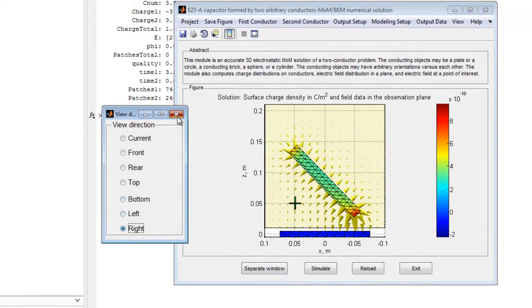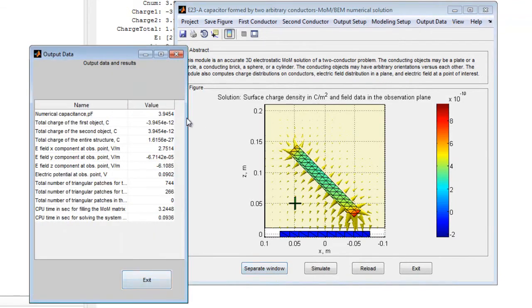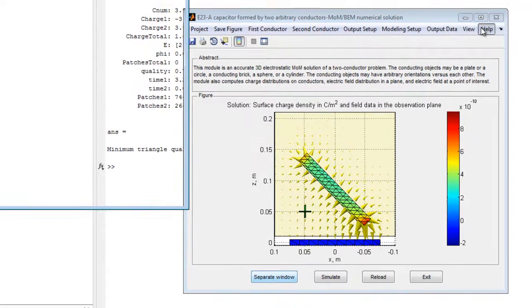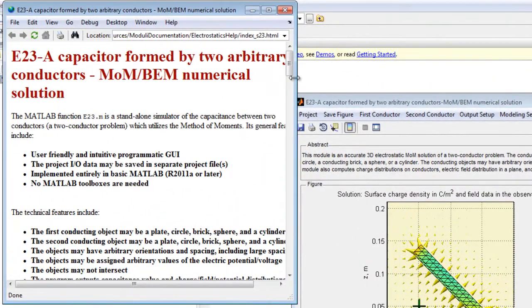Output data is displayed under the output data menu including the numerically computed capacitance value, the values for the electric field and the potential at the observation point, and other parameters such as the charges of each object.